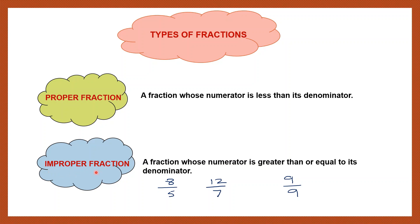So, what is an improper fraction? A fraction whose numerator is greater than, or equal to, its denominator. Such a fraction is called an improper fraction.